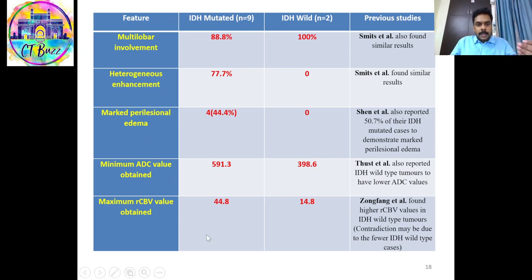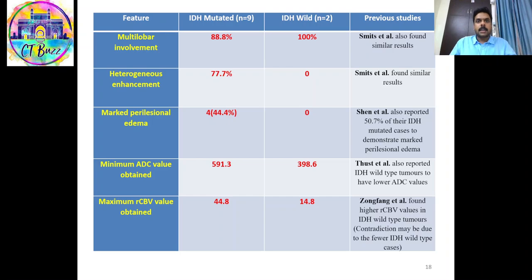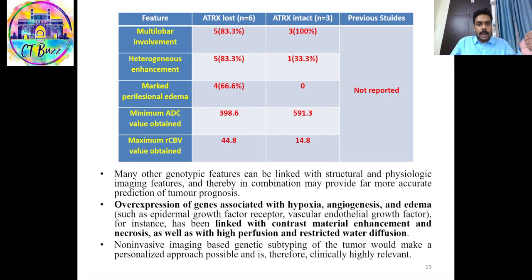An exception was the IDH mutation status and rCBV, where we found maximum rCBV to be higher in IDH-mutated cases, whereas Zhongfang et al. found it to be higher in IDH wild-type. The reason for this discrepancy may be the lesser number of IDH wild-type cases in our study. The ATRX mutation status has not been correlated with imaging findings before.